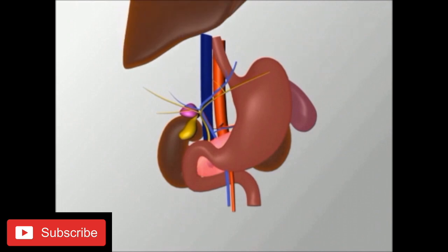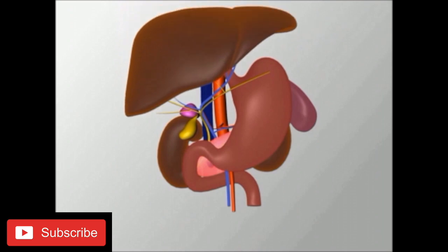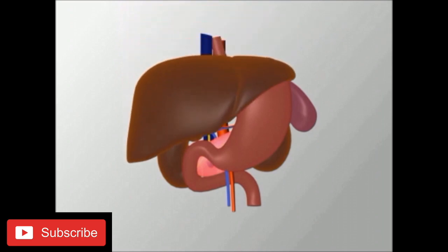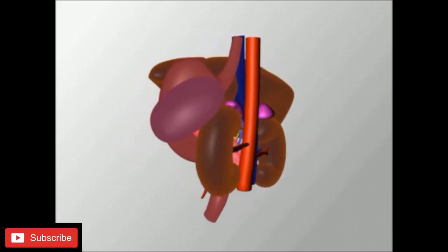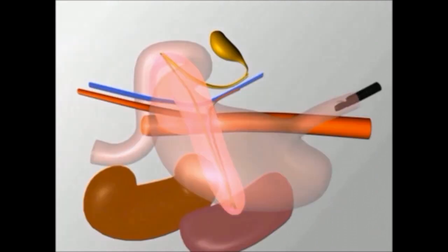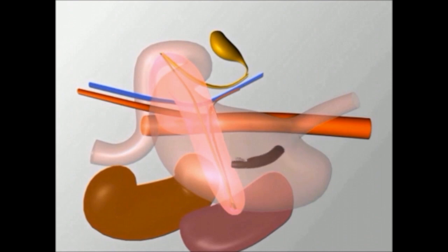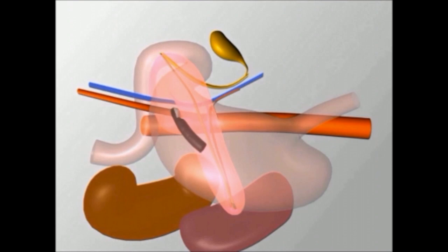The left lobe of liver lies anterior to the stomach, so when we go inside the stomach we can directly see the left lobe of liver. First we go inside the stomach, reach up to the proximal stomach, and then give a clockwise torque — that way our scope will be facing posteriorly towards the pancreas and the portal vein.